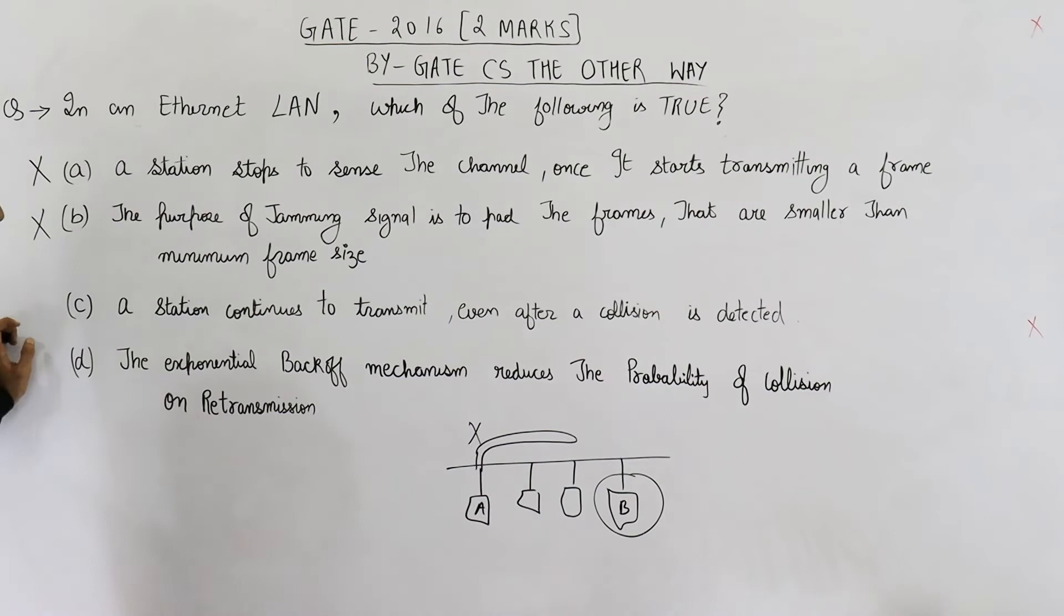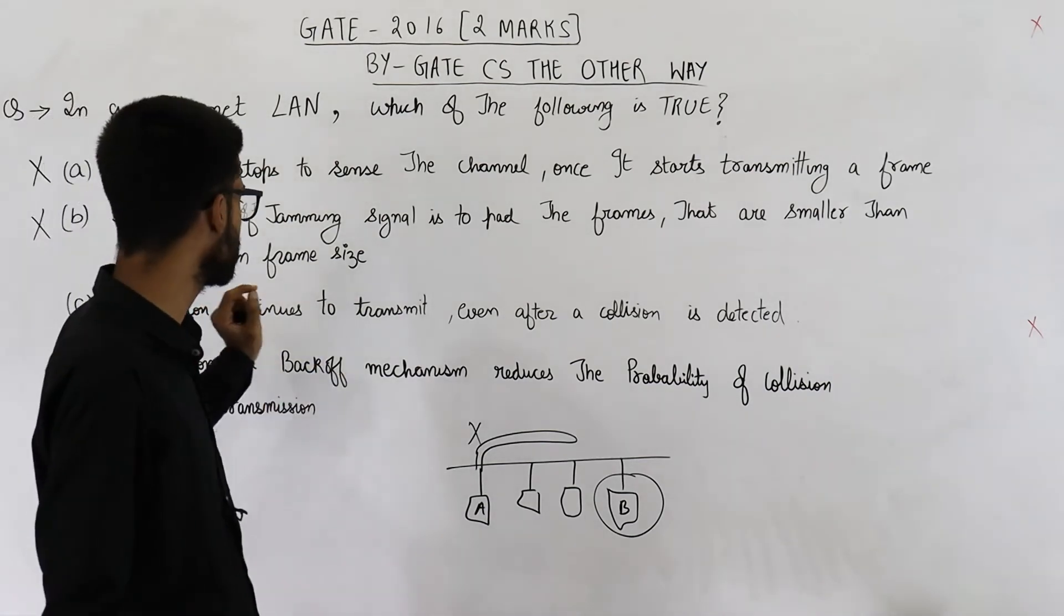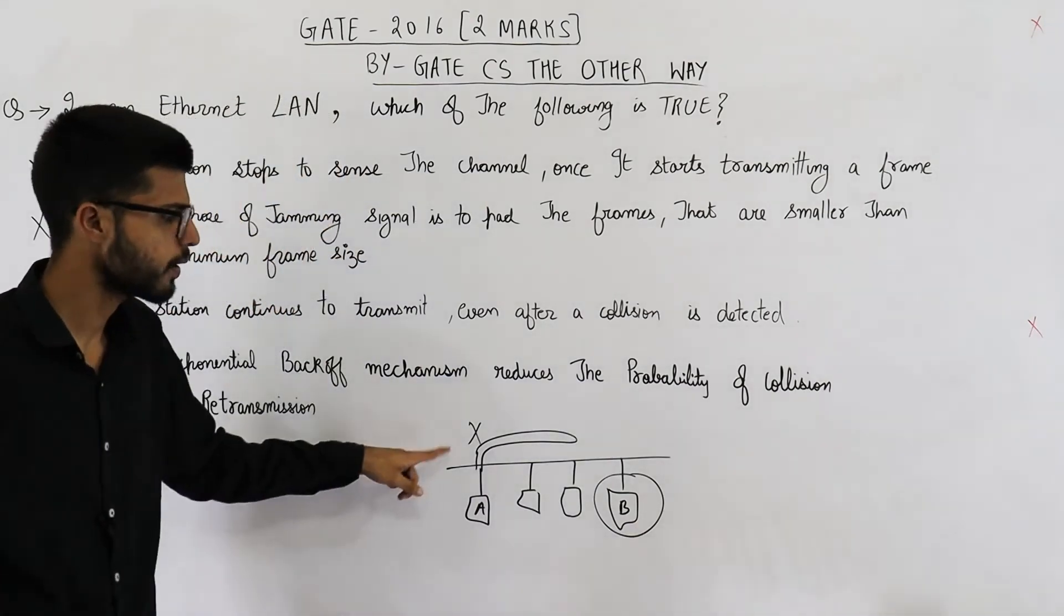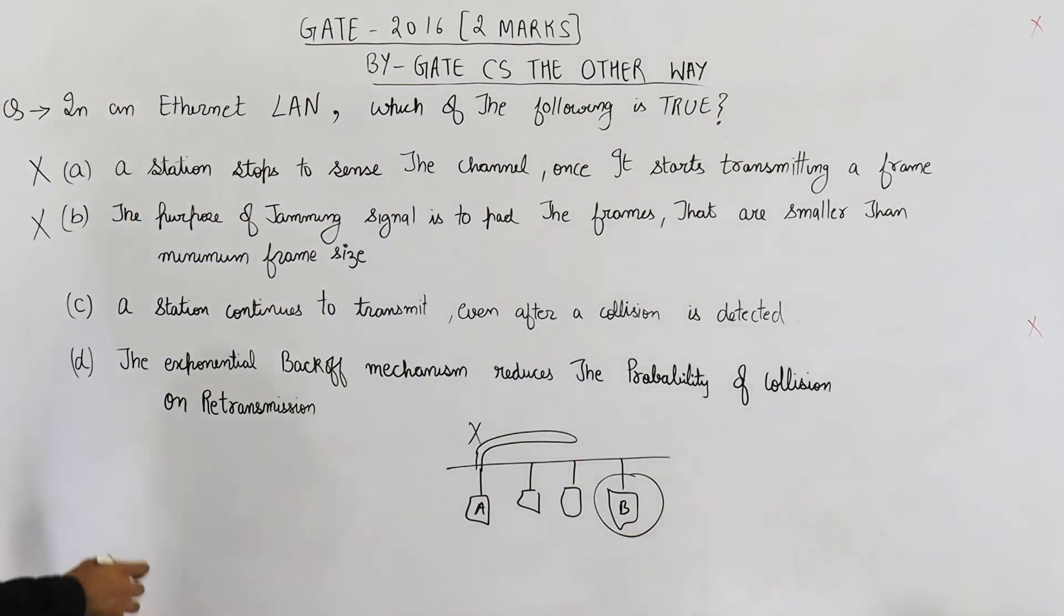Option number three or option C says a station continues to transmit even after a collision is detected. No, it will immediately stop sending the frame and it will send a jamming signal. So this one is also false.